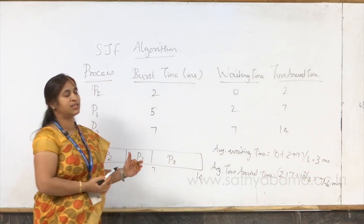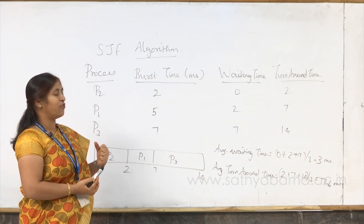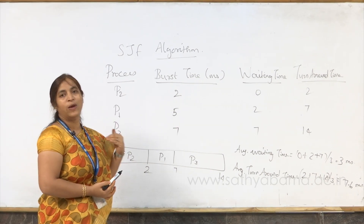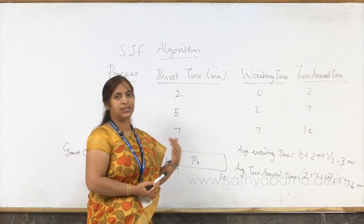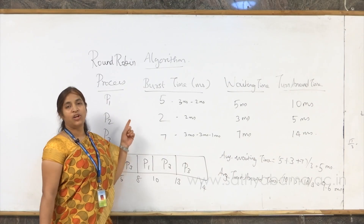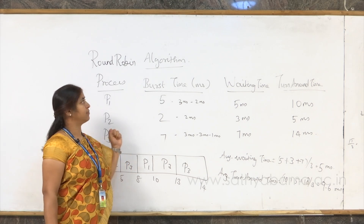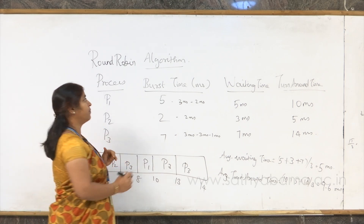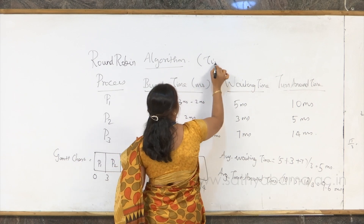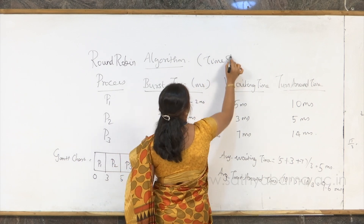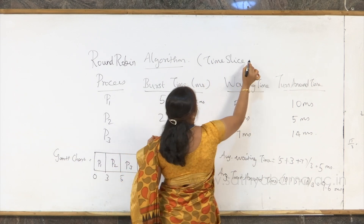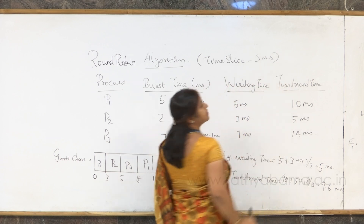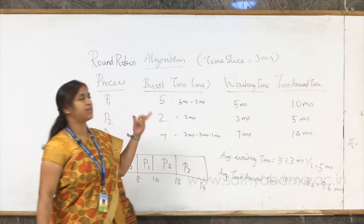When comparing FCFS and SJF, SJF will always have a lesser average waiting time. Now we are going to see the round robin algorithm. For round robin, we have a time slice metric — say, 3 milliseconds as the time slice.